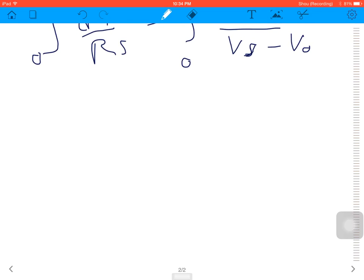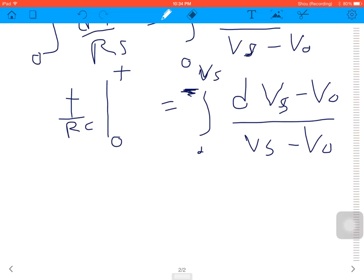From this we got t over RC, so t equals—no, the integral of dV out over VS minus V out.